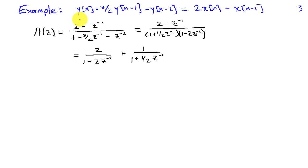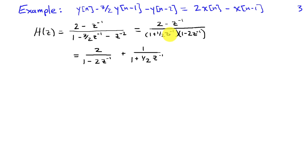Let's take an example. We have a difference equation: Y of n minus three-halves Y of n minus 1 minus Y of n minus 2 equals 2 X of n minus X of n minus 1. The system function is H of Z equals 2 minus Z inverse, divided by 1 minus three-halves Z inverse minus Z to the minus 2. Factoring the denominator gives 1 minus one-half Z inverse times 1 minus 2 Z inverse. Doing the partial fraction expansion, H of Z equals 2 over 1 minus 2 Z inverse plus 1 over 1 plus one-half Z inverse.